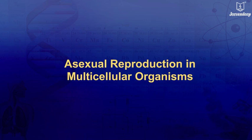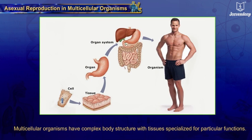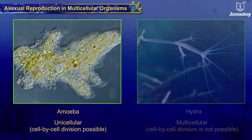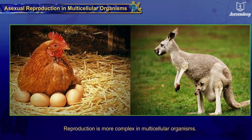Asexual Reproduction in Multicellular Organisms. Multicellular organisms have complex body structures with tissues specialized for particular functions. Cell-by-cell division to reproduce, as seen in unicellular organisms, is thus not possible in these organisms. Hence, reproduction is more complex in multicellular organisms.